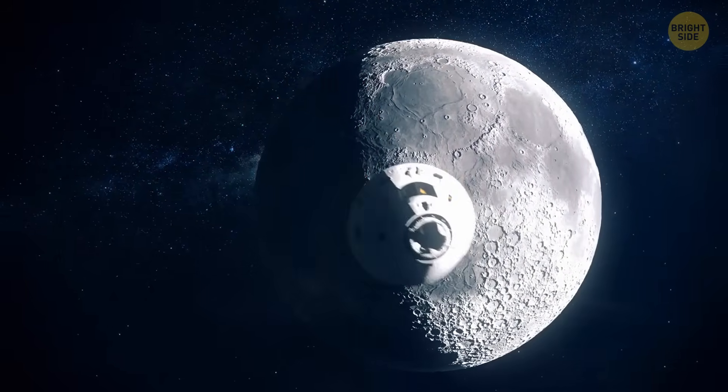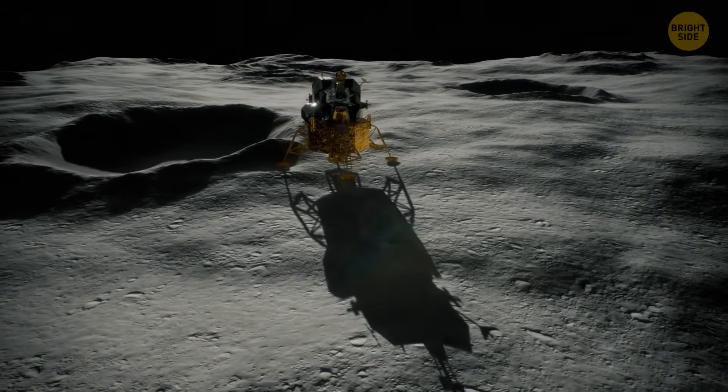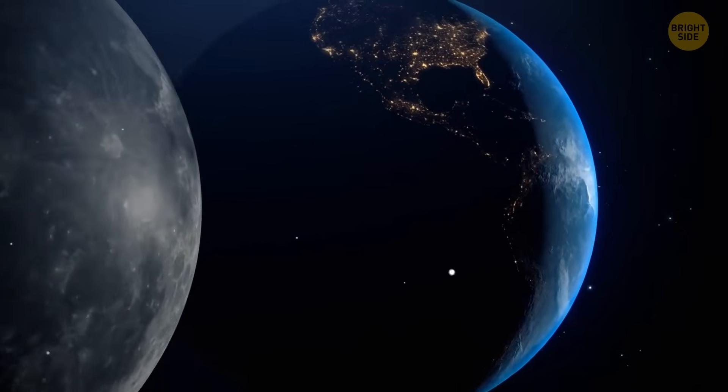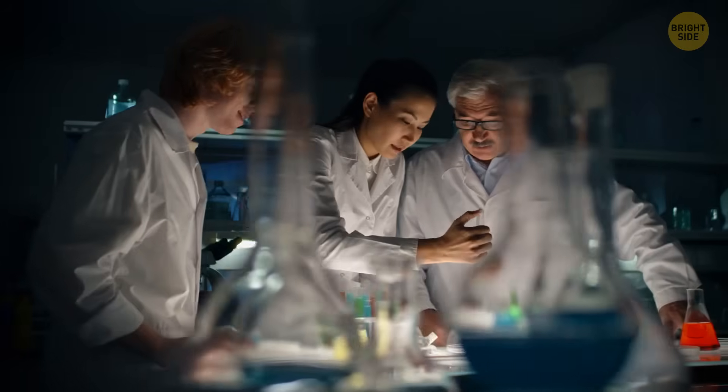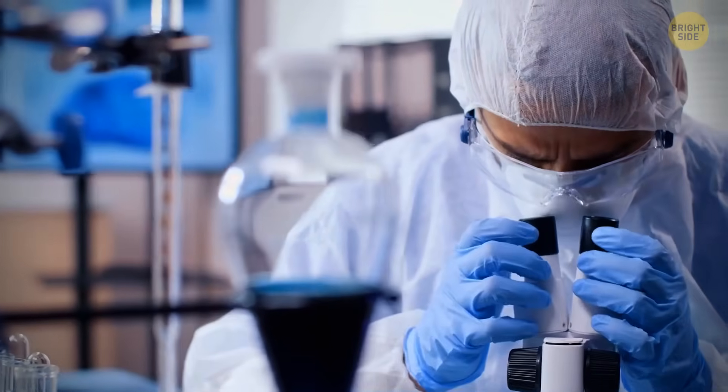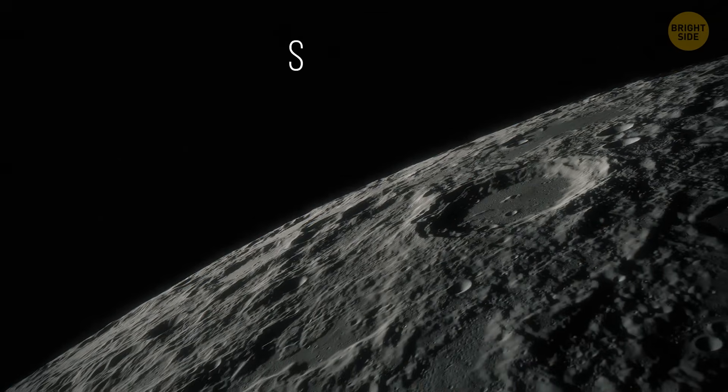Anyway, after the probe went to the nearest side of the Moon, it spent several days digging through the surface and rocks and then returned to Earth. In total, it collected about 4 pounds of various lunar rocks, like basalt, solidified lava, and so on. And yeah, maybe it doesn't sound too impressive, but it's actually a mini-breakthrough. After all, we hadn't received any lunar samples since 1976.